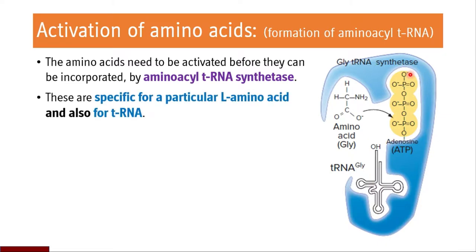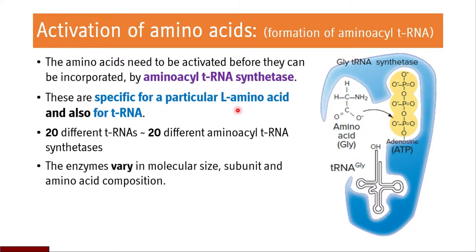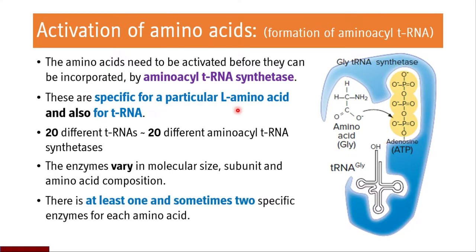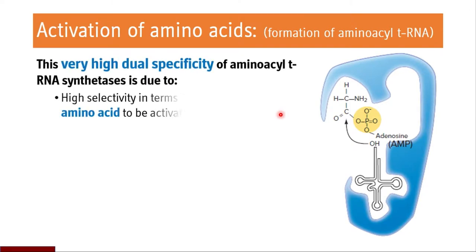There are enzymes which are specific for a particular L-amino acid and also for the tRNA. There are at least 20 different tRNAs and 20 different aminoacyl tRNA synthetases in a protein synthesizing system. These enzymes vary in molecular size, subunit, and amino acid composition because they are very specific. There is at least one or sometimes two specific enzymes for a given amino acid.